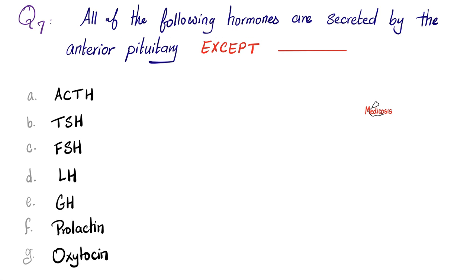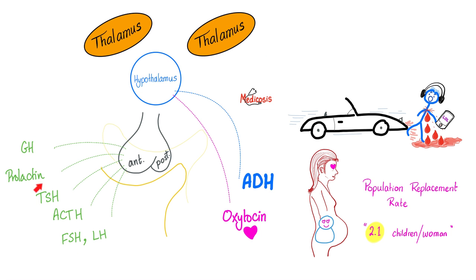Next, all of the following hormones are secreted by the anterior pituitary. Except, and the answer here is, oxytocin. Because oxytocin and anti-diuretic hormone are released by the posterior pituitary. But all the others are released from the anterior pituitary. Please pause and review. Anterior pituitary hormones are here. The posterior pituitary hormones are here.